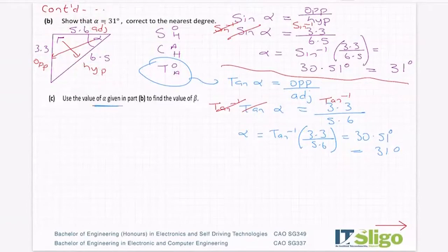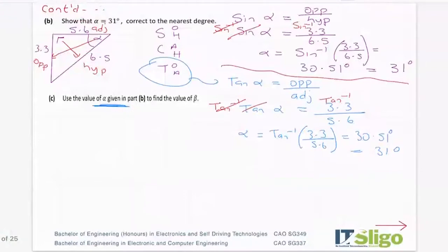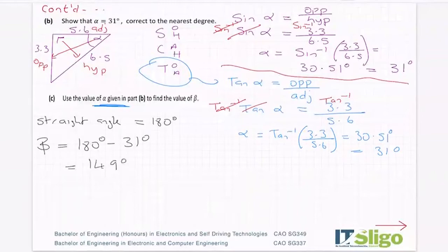Okay, so now the next part is saying, using the value of alpha given in part B, find the value of beta. So back I go to the diagram again. So I now know that this one down here is 31 degrees. And they're asking me what's beta. And I'm going to draw my protractor here because now there's a straight angle. And as you know, a straight angle is 180 degrees. So therefore beta is equal to 180 degrees minus that 31 degrees that I just found, which is 149 degrees. So your straight angle.